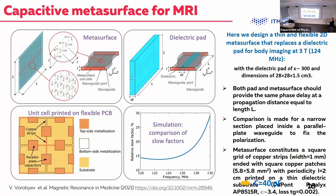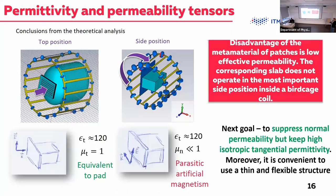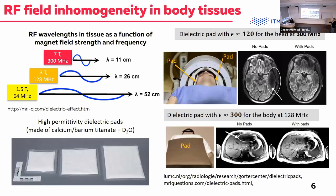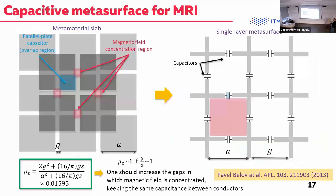We optimized the whole structure to have an equivalent permittivity of 300, because at 124 MHz—the operating frequency of 3 Tesla scanners—this is the optimal value for the human torso. Simulations confirmed that the artificial pad performs equivalently to the natural ceramic pad.